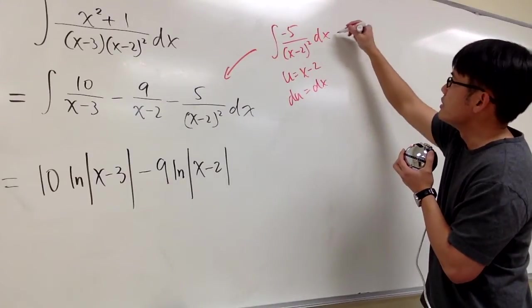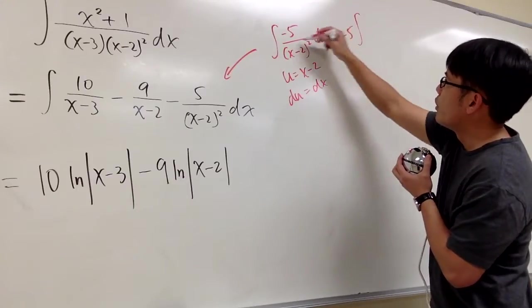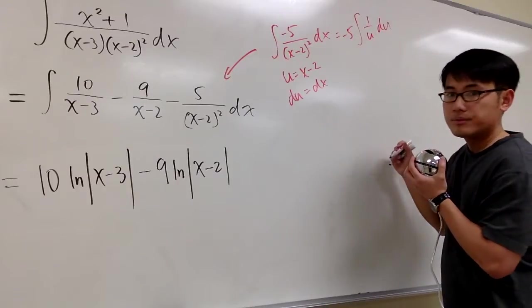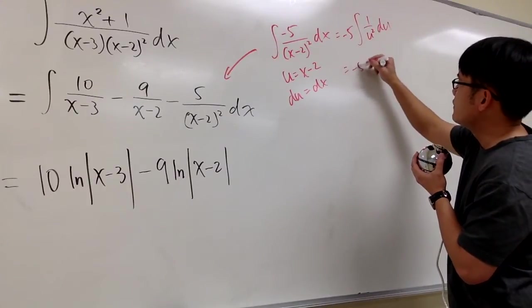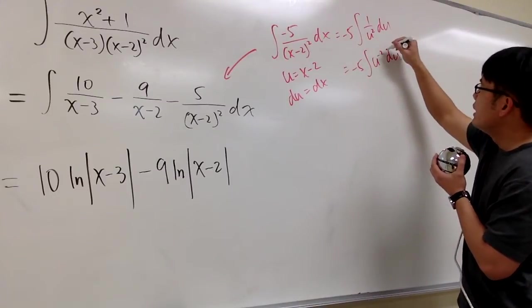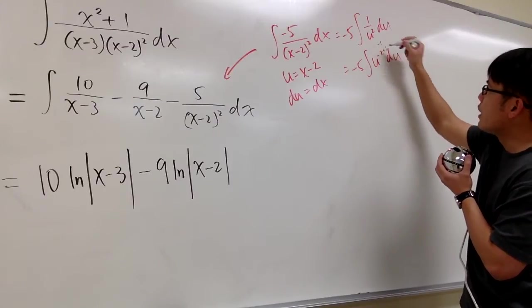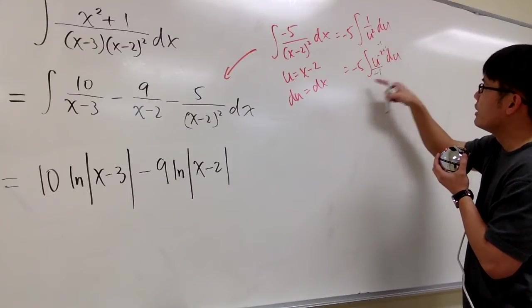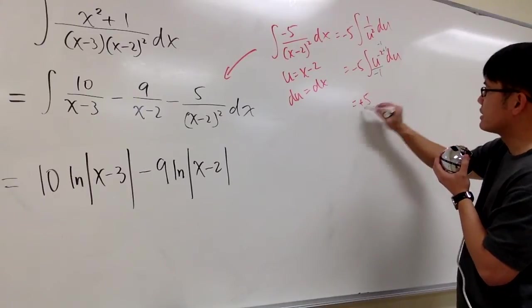So in another word, this is the same as bring the negative 5 in the front. We have the integral 1 over u squared du, and this is the same as negative 5 integral of u to the negative 2 du. And then we plus 1. And negative 2 plus 1 is negative 1. And we divide it by negative 1. And there will be positive 5 now.